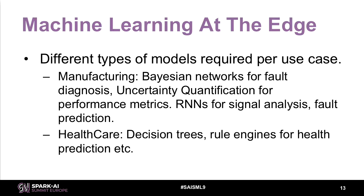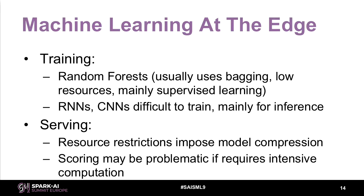You also need to think about verticals, because depending on the sector you may need to deal with different models. In manufacturing it's very common to see Bayesian networks or recurrent neural networks. If the models are very complex, it may not be possible to move them to the edge and you'll have to do training and serving at the backend. For simpler models like random forest, both training and serving at the edge are possible. You have to think about what model can be used for what phase — training versus serving — and some models can't be used for both because of complexity and size.